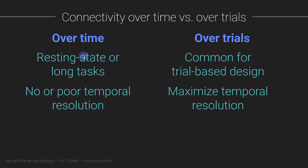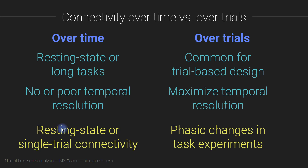These are things to think about as you're doing your analyses. My recommendation: use synchronization over time when you have resting state, sleep, or spontaneous data without a trial structure, or if you need single-trial connectivity values. Connectivity over trials would be your standard go-to method when looking at phase dynamics in task-related experiments. As with many analysis choices, there's no right or wrong answer — you just have to think carefully about what makes the most sense for your particular experiment and hypothesis.